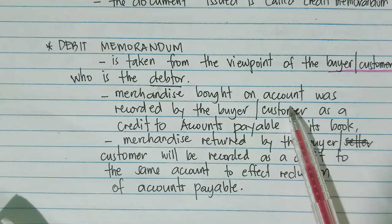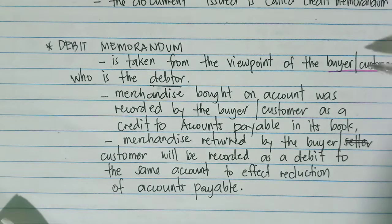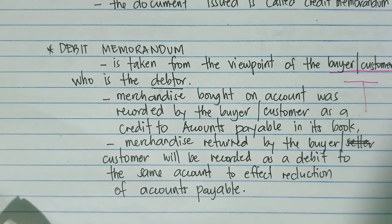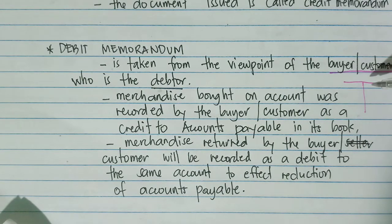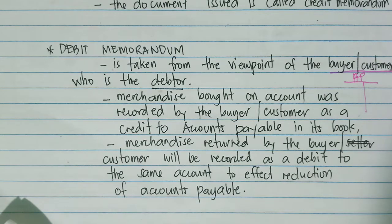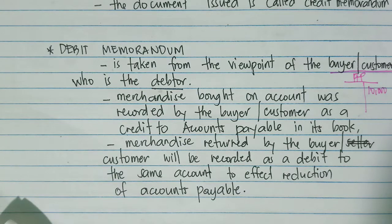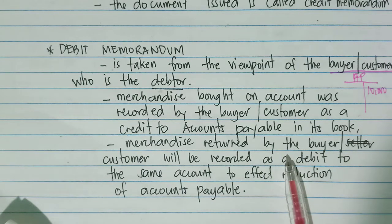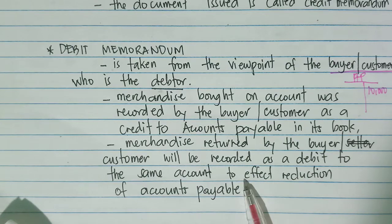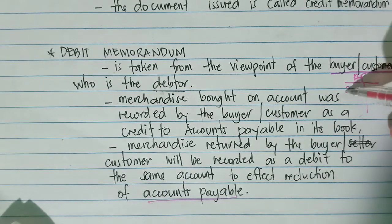Merchandise bought on account was recorded by the buyer or customer as a credit to accounts payable in its book. On the buyer's side, the buyer owes the seller, so accounts payable is the account title. For a 10,000 worth of merchandise purchased on account, when the buyer returns merchandise, the same account will be debited to effect a reduction of accounts payable — for example, 2,000 returned, leaving 8,000.